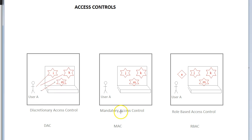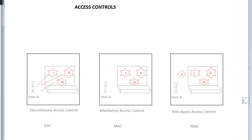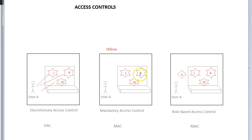Mandatory access control doesn't work that way. This is where SELinux comes in, which is the bulk of what Red Hat is talking about here. SELinux is categorized under mandatory access control. For mandatory access control, the user does not always have access to resources just because they created them or because somebody gave them access. The way it works is that these objects are labeled — let's label them.